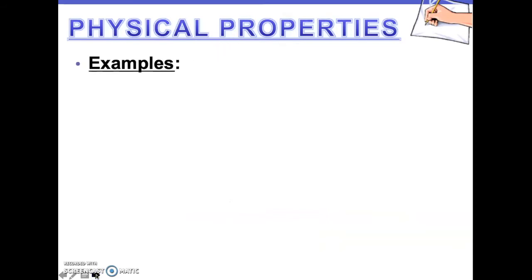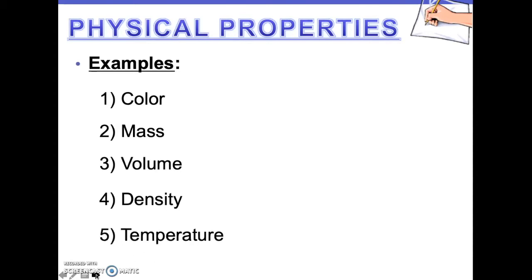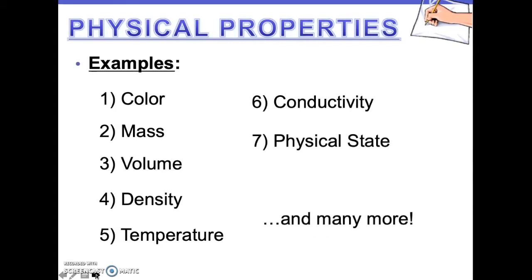The seven properties we will be covering are: number one, color; number two, mass; number three, volume; number four, density; number five, temperature; number six, conductivity; number seven, physical state. And there are many more, but these are the seven that we will be covering.